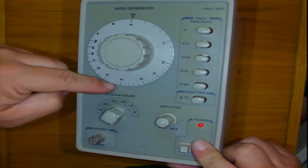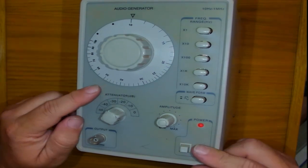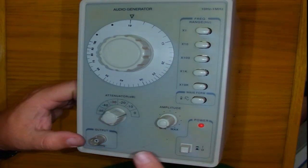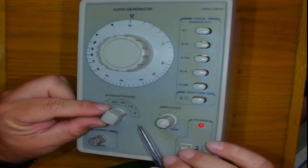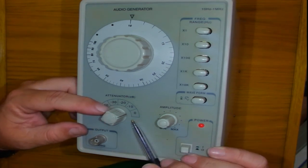We prefer to have a strong signal and then attenuate that signal. Now the scale is given in decibels. Attenuator means it reduces your amplitude that is going to come here by the output. It will reduce it.